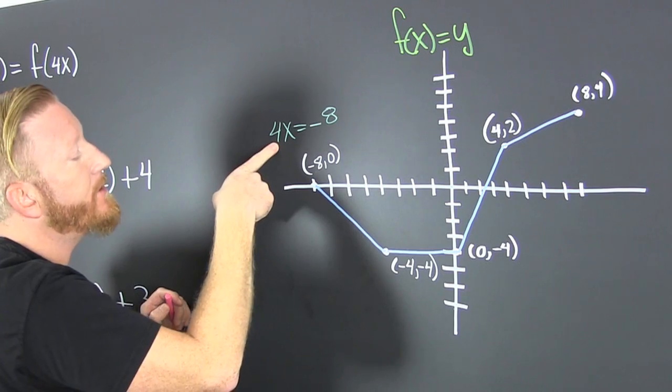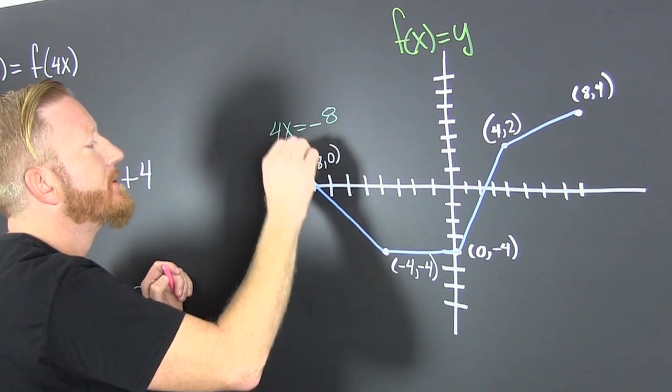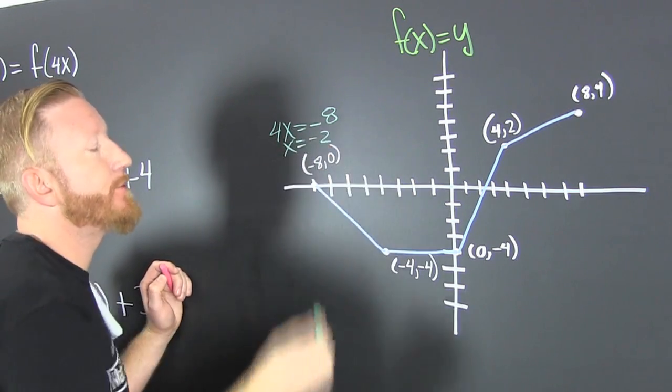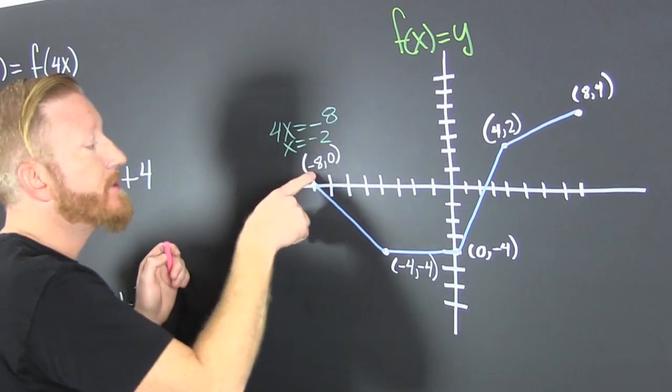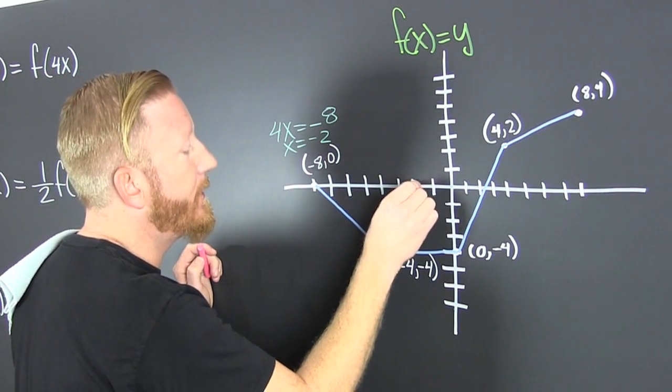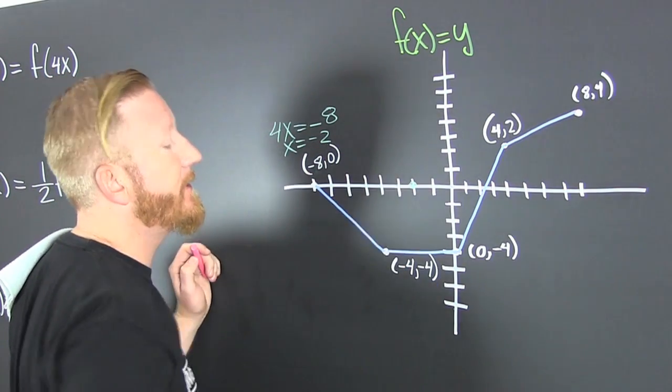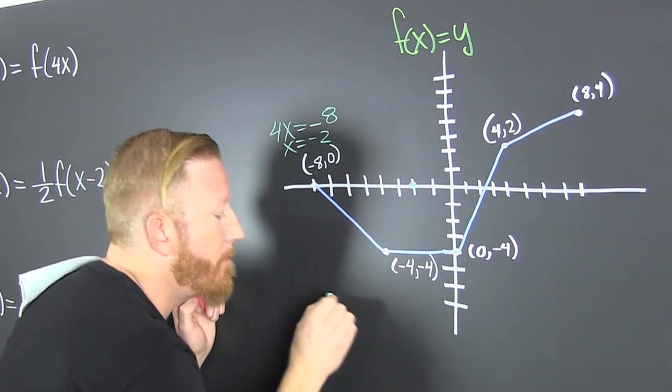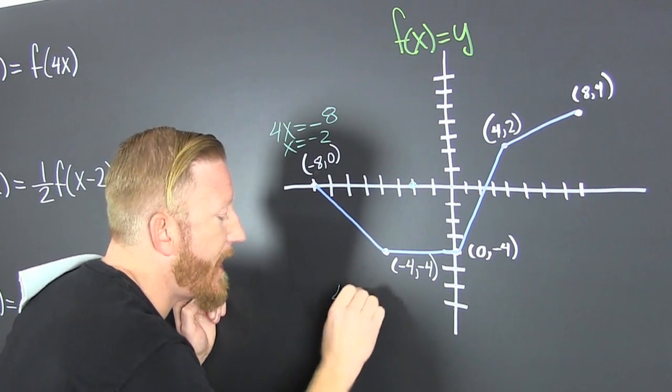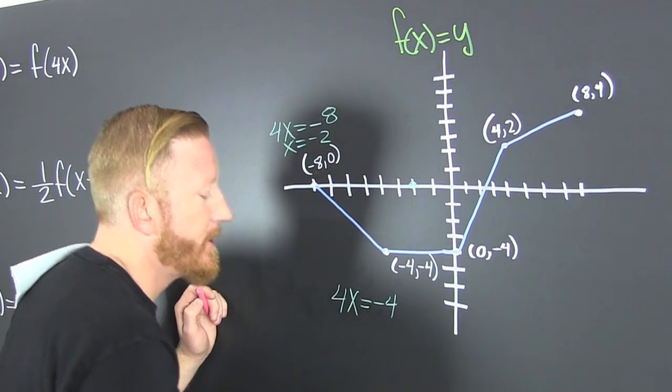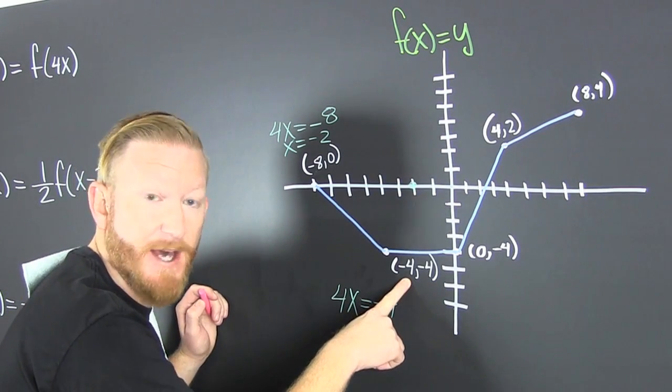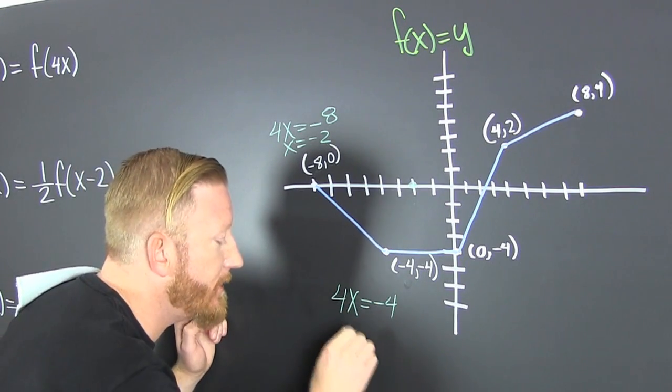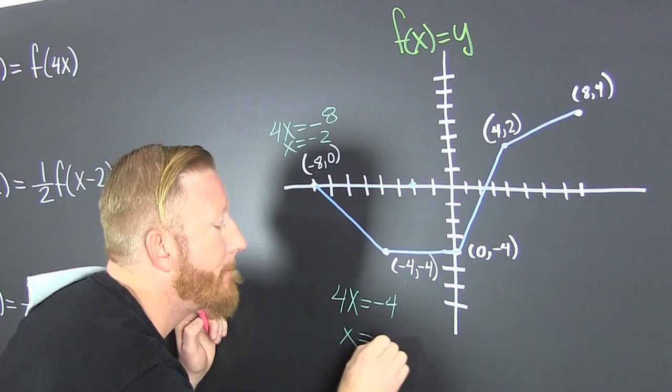So then 4x is equal to minus 8. What's our new x? Our new x is going to be minus 2. This is shrinking things. So minus 2, 0 is going to be on there. Then here, 4x is equal to minus 4. So what's my new x value going to be? My new x value is going to be minus 1.